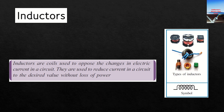Here you can see different types of inductors — they are just copper wires wound in the form of coils. Different shaped inductors exist, and the circuit symbol for an inductor is shown here.